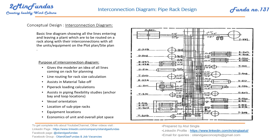This diagram also helps in locating sub racks and fixing equipment locations, since we can understand the flow — how many lines are entering and exiting the pipe rack — and plan equipment locations accordingly. It also helps with economics of the unit and overall plot space, as we know how many lines and equipment will be connected and their sequence, all on a single page, allowing us to plan overall space requirements.